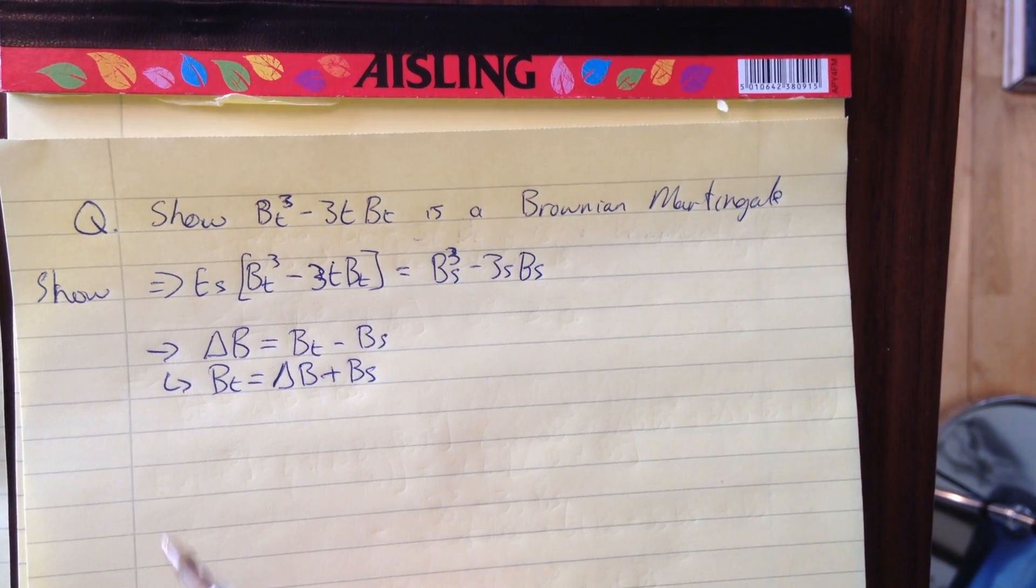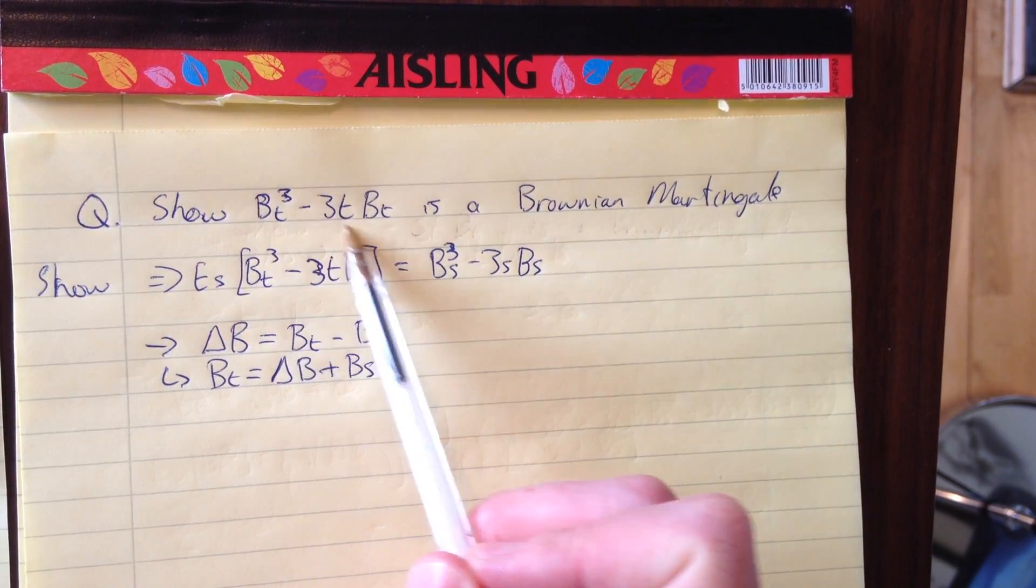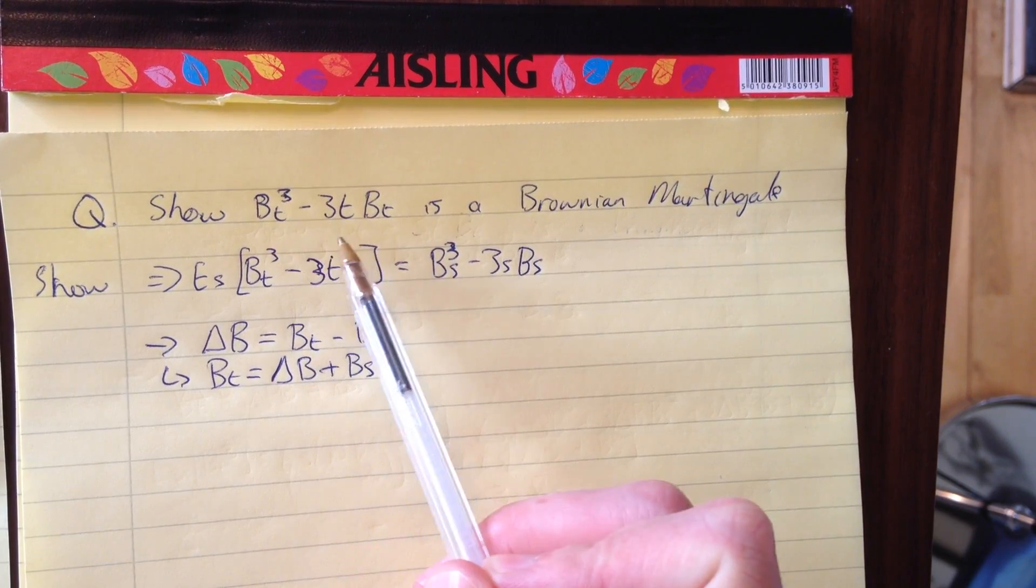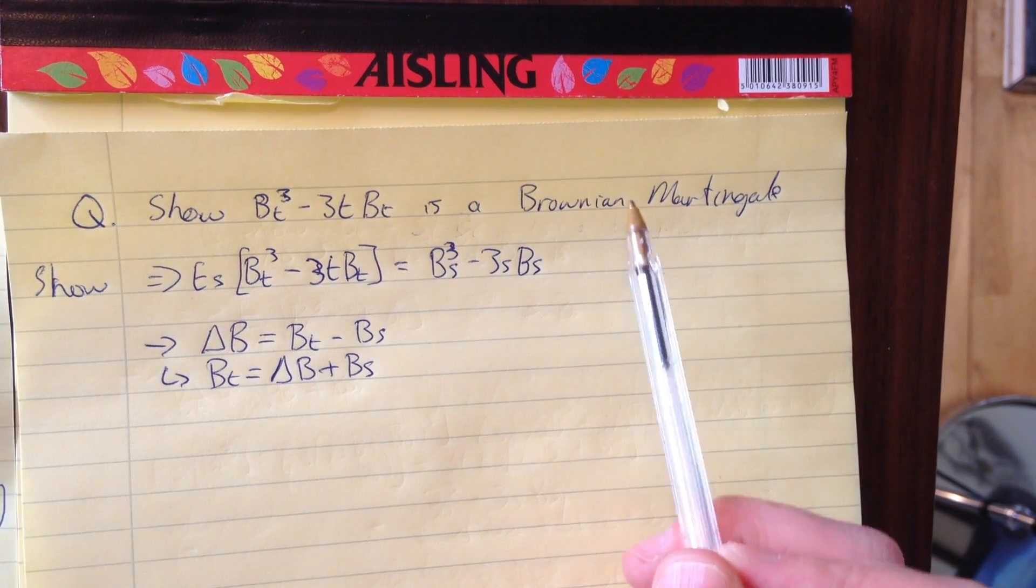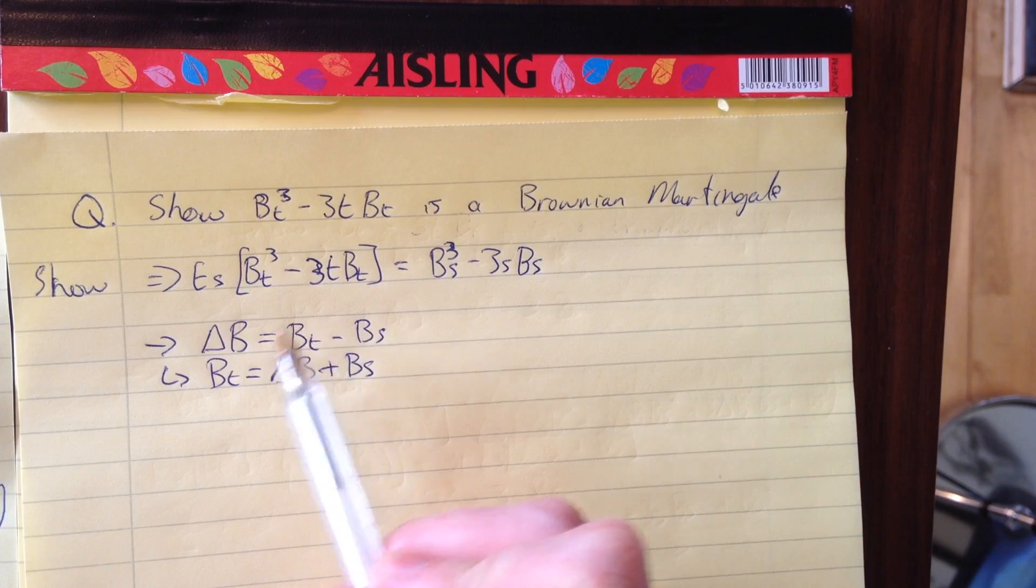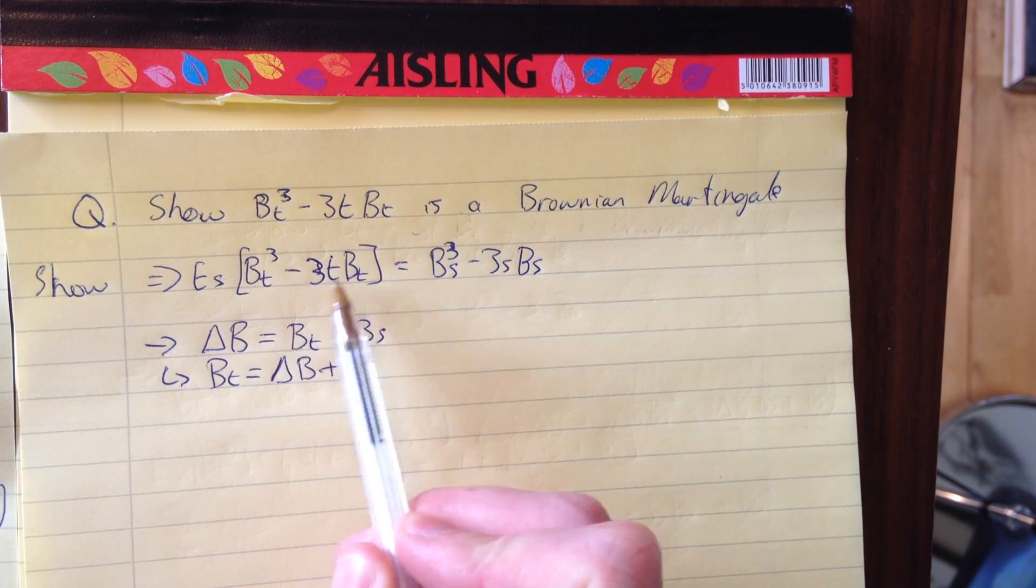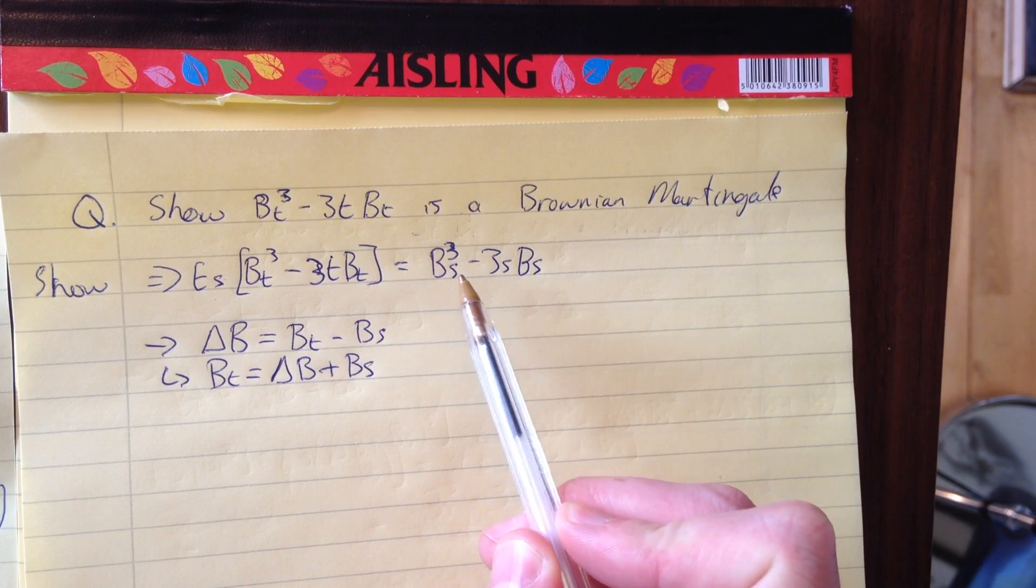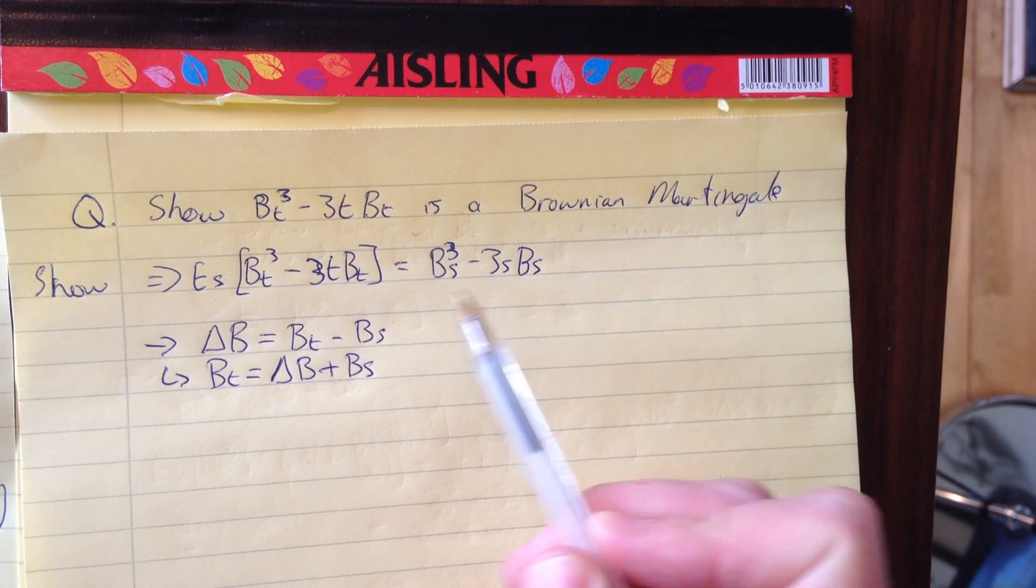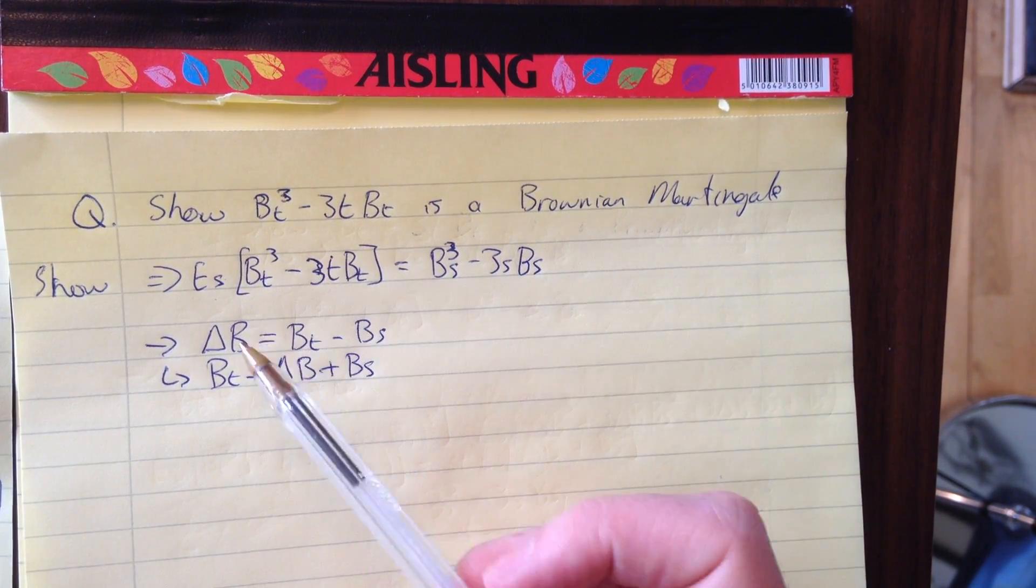Hey guys, I'm going to do a quick example to show that this equation, B_t^3 - 3tB_t, is a Brownian Martingale. I'll show the most important property, which is that the expected value under the filtration S of this equals B_s^3 - 3sB_s, which shows it's a Brownian Martingale.